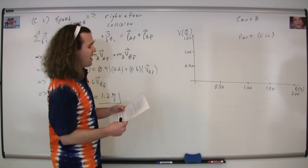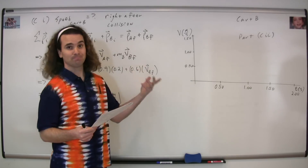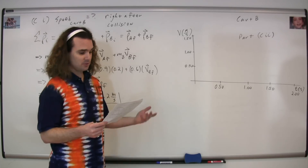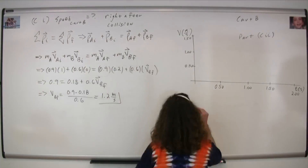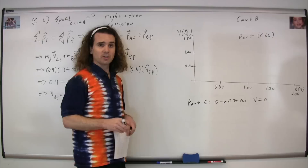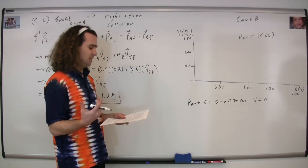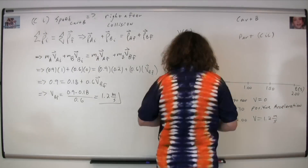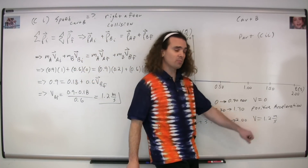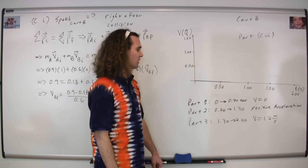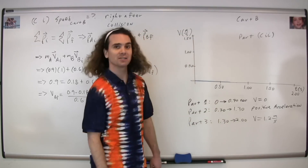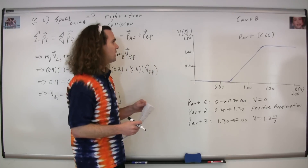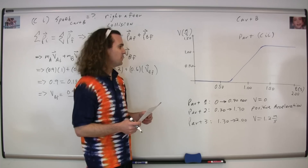Part cii asks us to draw the velocity as a function of time for glider B. Similar to part b, there are three regions. Part one: from 0 to 0.70 seconds, cart B has a constant velocity of 0, so we draw a horizontal line at 0. Part two is the collision, during which cart B increases velocity from 0 to its final value. Part three: from 1.30 to 2.00 seconds, cart B has a constant velocity of 1.2 meters per second. We connect the two horizontal sections with a positive slope and curves to show positive acceleration.